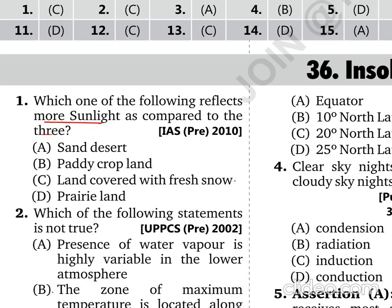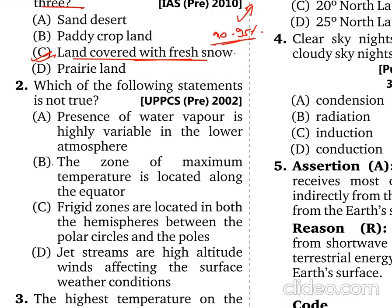Snow and ice reflect the most sunlight — approximately 90 to 95% of light is reflected. Regarding the statement that the variation of water vapor is highly variable in the lower atmosphere: it is around 4% maximum, so that statement is not necessarily incorrect. The zone of maximum temperature is located along about 20° North latitude, not exactly along the equator.